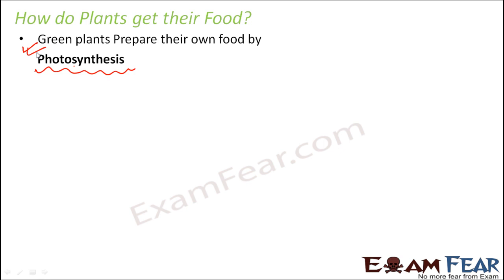Even when your mom prepares food for you, what does she prepare? Sometimes she prepares maybe a sandwich for you. But from where does she get the raw materials to prepare a sandwich? She needs vegetables, she needs butter, she needs bread. The vegetables are obtained from plants, and for the bread, again, you need products obtained from plants, like cereals are obtained from plants.